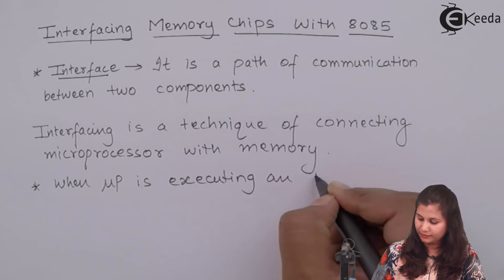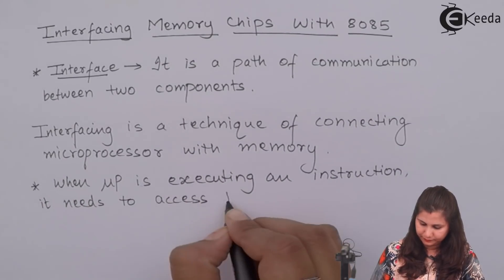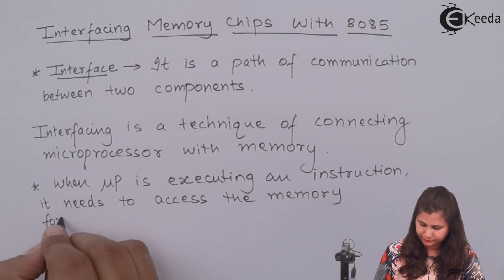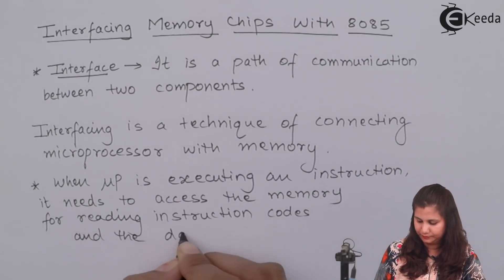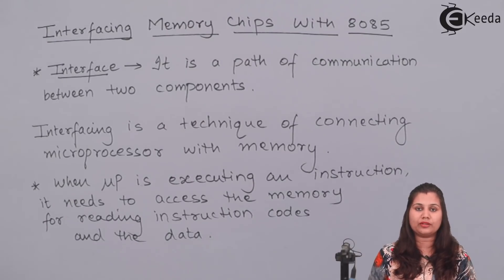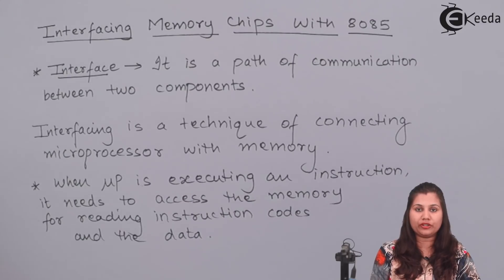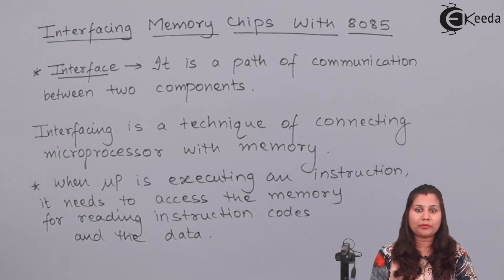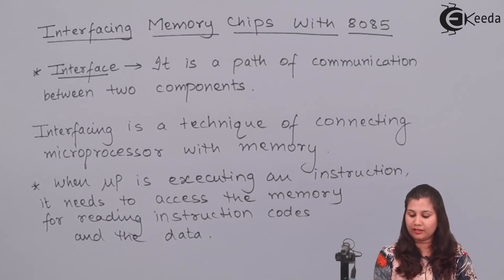When the microprocessor is executing an instruction, the programs which the programmer or manufacturer has written in the memory also need to be executed. The instruction codes, intermediate results, and data are all stored in the memory. So whenever the microprocessor wants to utilize that data, it needs to access the memory and it needs the interfacing circuit.